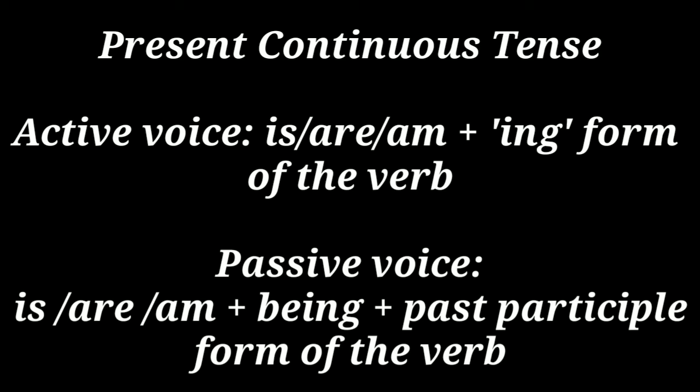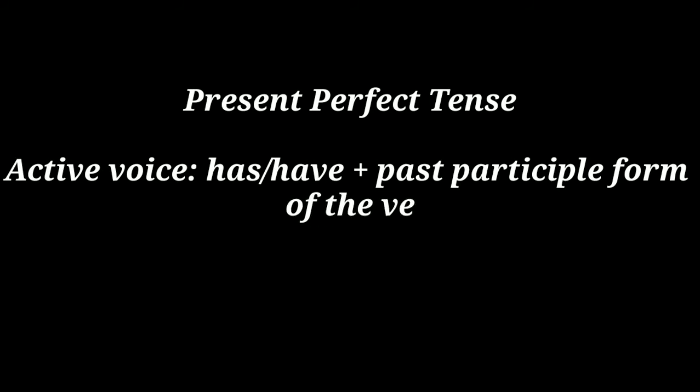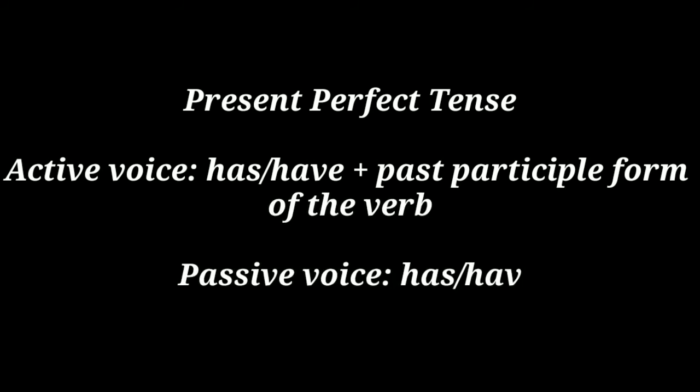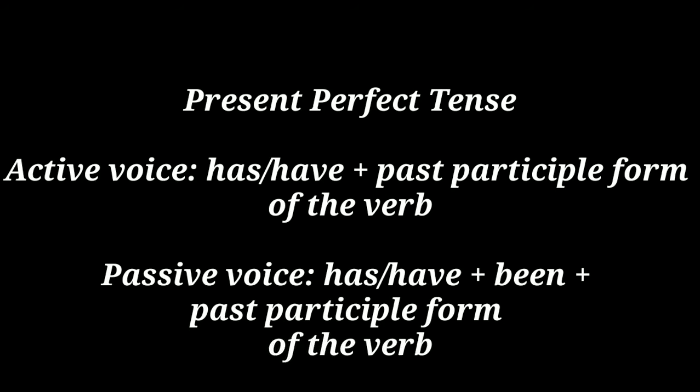In present perfect tense, in active voice we write 'has' or 'have' plus the past participle form of the verb. For example: 'Reetha has eaten an apple.' In passive voice we write 'has' or 'have' plus 'been' plus the past participle form of the verb. For example: 'An apple has been eaten by Ravi.'